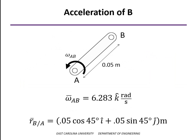So, let's find the acceleration of point B first. Again, omega is constant, so written as a vector, it's 2 pi k radians per second. And the position vector of B relative to A is as shown here. We did that in the velocity analysis as well.